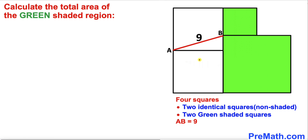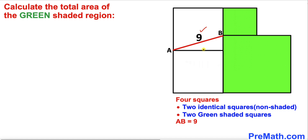In this video we have got four squares as you can see in this diagram, such that two of these squares are identical squares — this one and this one — whereas we also have two green shaded squares. Moreover, this line segment AB is nine units, and now we are going to calculate the total area of this green shaded region.